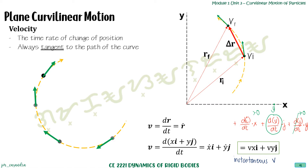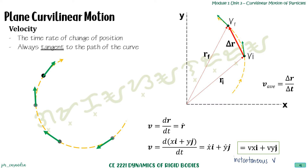For average velocity, it is computed as delta r over delta t, which is the change in position divided by the change in time. Whichever variable you use — r, d, or s — as long as you know it represents position, it is acceptable.